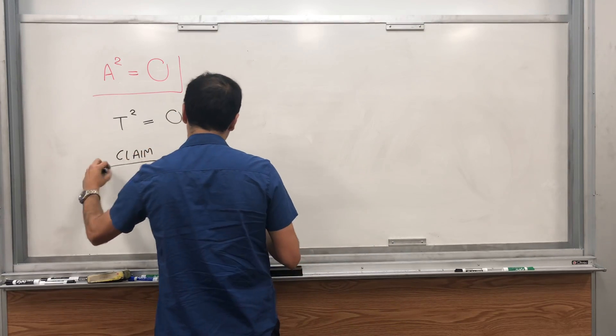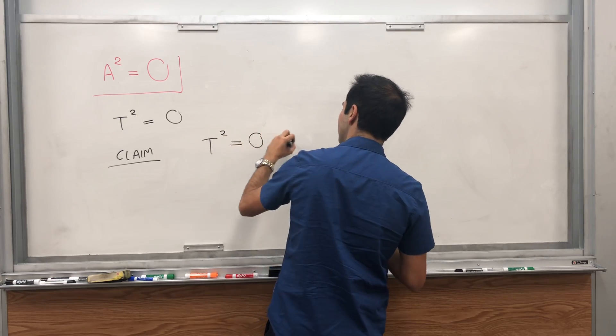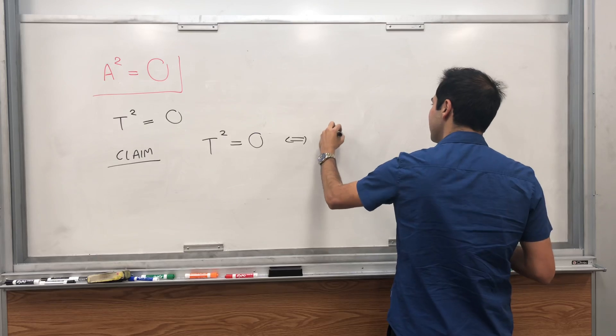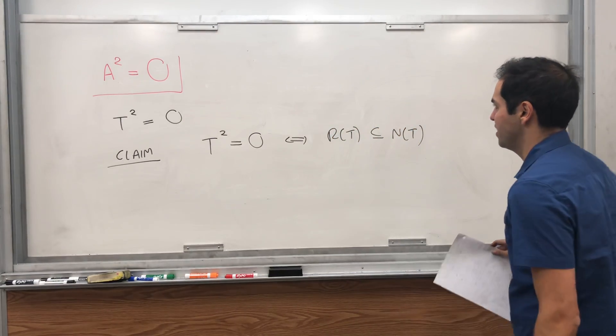such that T squared equals the zero transformation, namely the function that takes any vector and puts it to zero. And here's the big claim, T squared equals the zero transformation if and only if, geometrically,